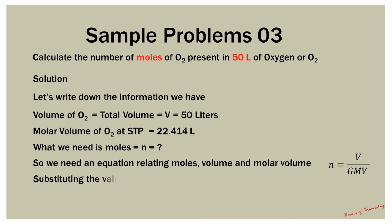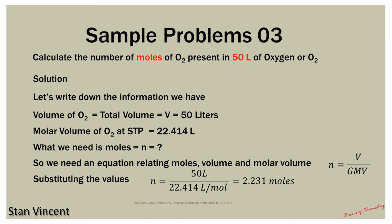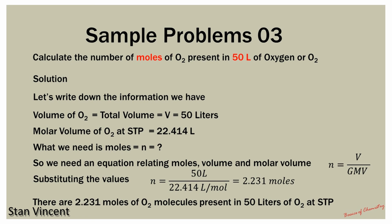Now we can substitute the values: n is equal to 50 liters divided by 22.414 liters per mole, which is equal to 2.231 moles. The final statement is: there are 2.231 moles of diatomic oxygen present in 50 liters of diatomic oxygen at STP. These are the 3 basic problems involving moles — mass, number, and volume.